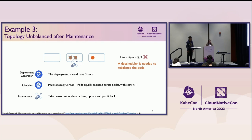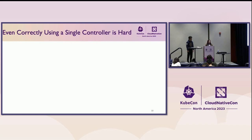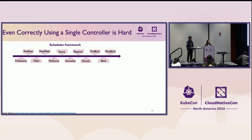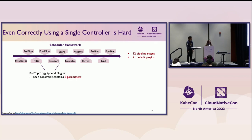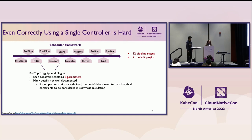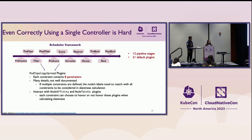From these examples, we can see failures are caused by non-trivial interactions, and sometimes by non-deterministic events. For certain topologies, it's really hard to manually reason about all these things, especially across teams. I also want to mention that even correctly using a single controller is hard. The scheduler framework contains 12 different pipeline stages, 21 default plugins. Even for one single plugin, it contains eight different parameters per constraint, and many details are not documented well. For example, if multiple constraints are defined, the node label needs to match all constraints to be considered in skewness calculations, and constraints interact with other plugins.